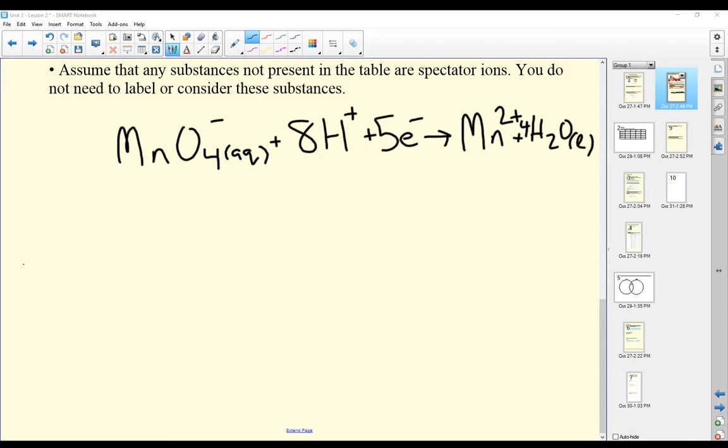The other reaction we have is with copper, which is Cu solid. Cu solid produces Cu2+ aqueous plus 2 electrons. And then what do I do to find my net reaction?